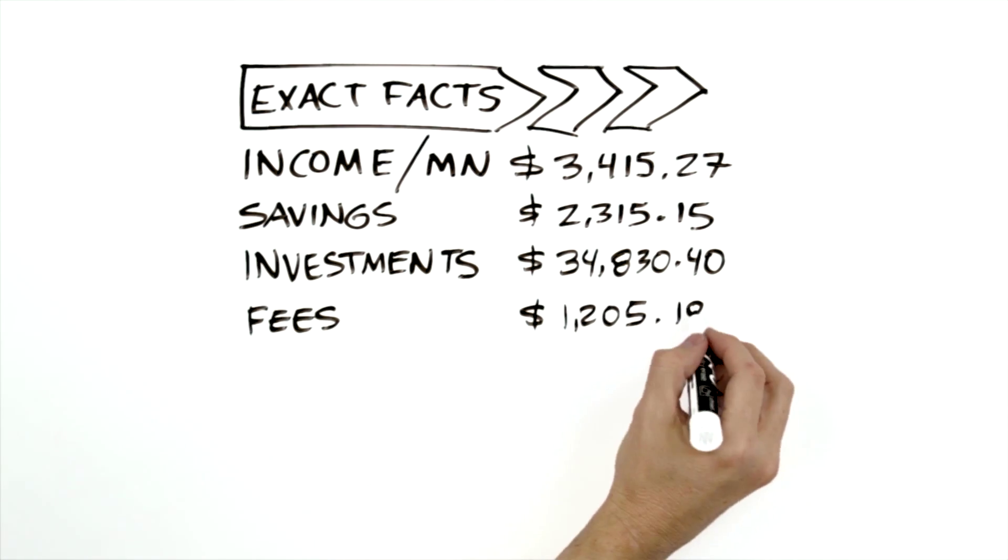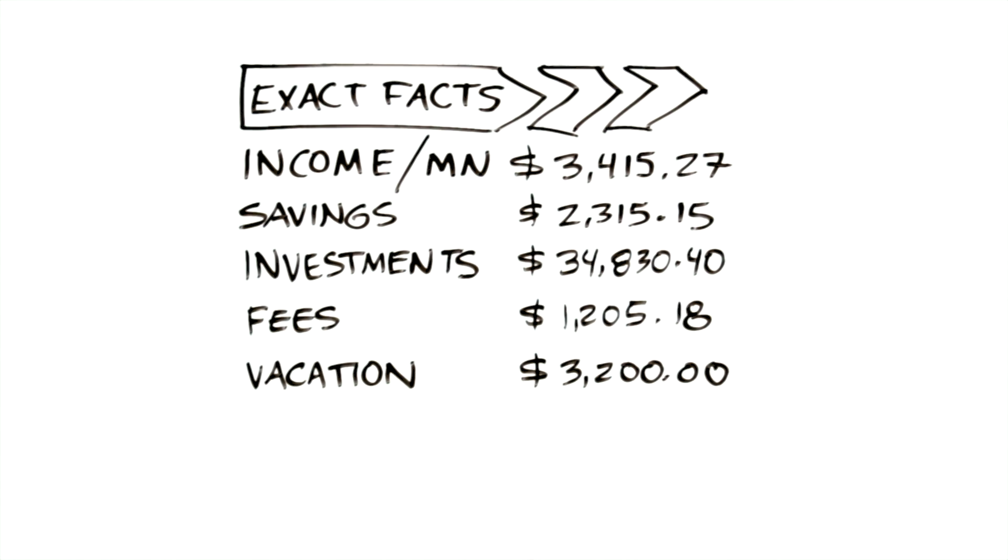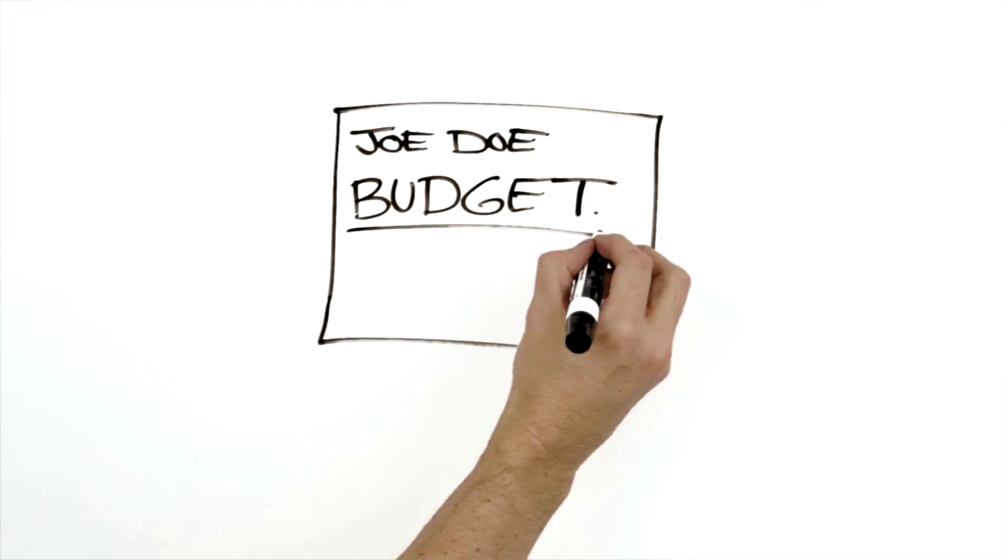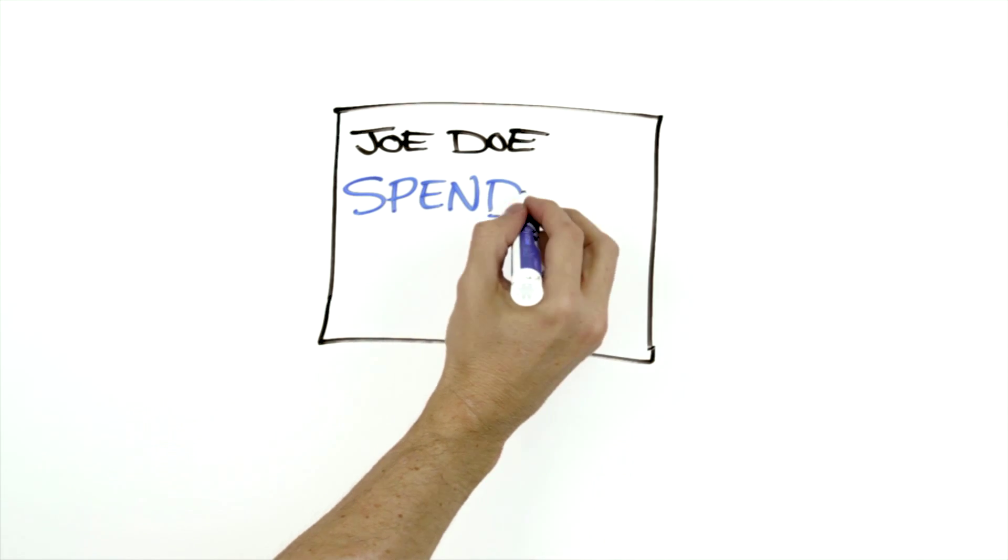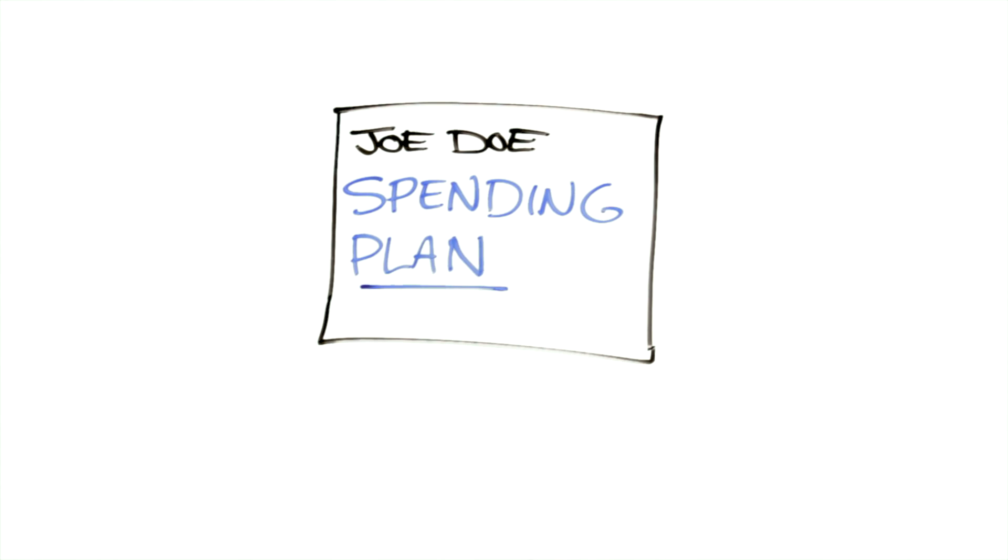Now, all of us have limited income, but really unlimited number of things we can buy. So a budget, and I like to call it a spending plan, will help you establish boundaries so you can end up spending your money wisely.